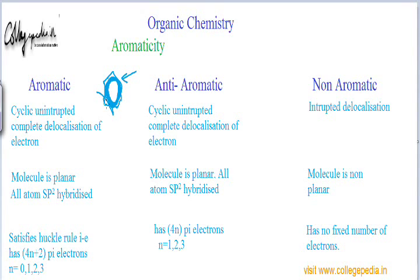The other hybridization in which the geometry is planar is sp2 hybridization, which gives trigonal planar geometry. If we go to sp3, that is tetrahedral, and higher hybridizations are not planar. So the only planar geometry that can exist in a cyclic ring is sp2 hybridization. Therefore, the first condition is that the molecule must be planar, and for that, all atoms must be sp2 hybridized. If any atom is not sp2 hybridized, the molecule is not planar and cannot be aromatic.